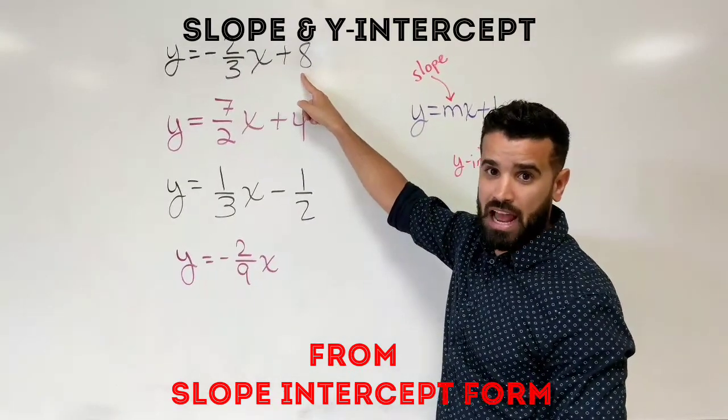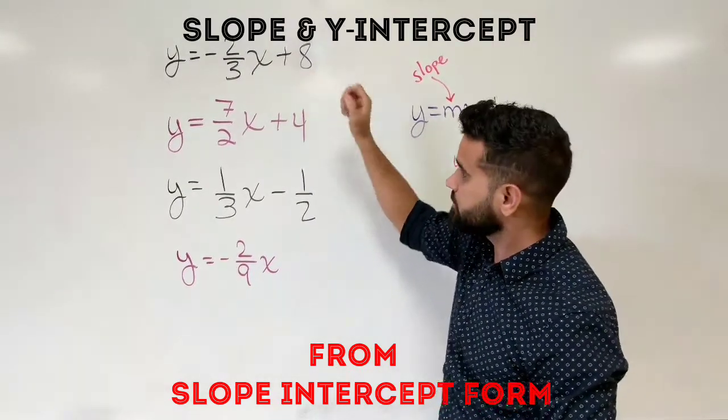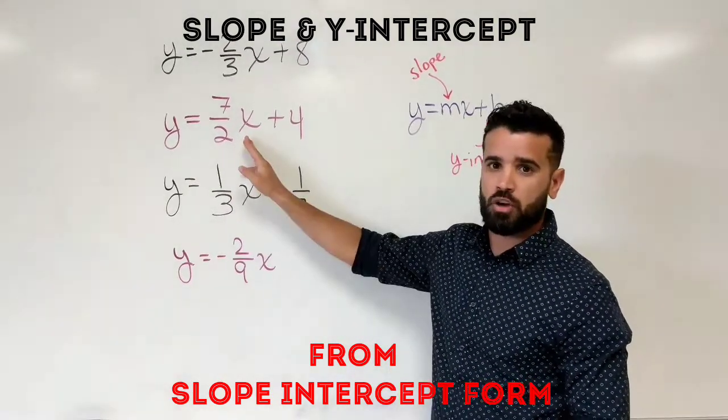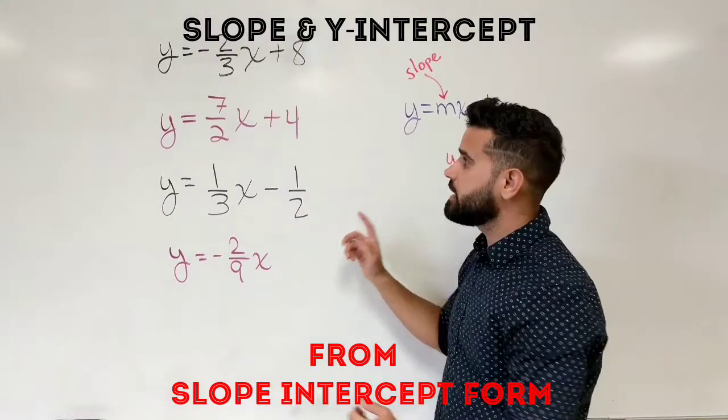Here we have y equals seven over two x plus four. We have a positive slope. It's going to rise from the left towards the right and it's going to cross the y-axis at four.